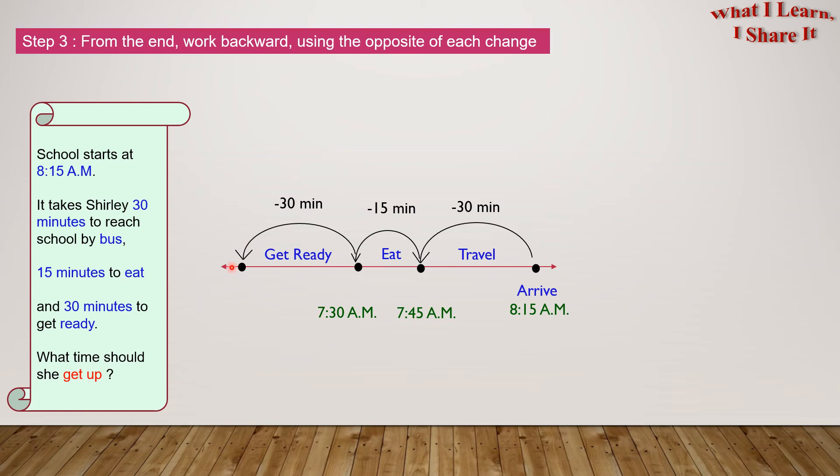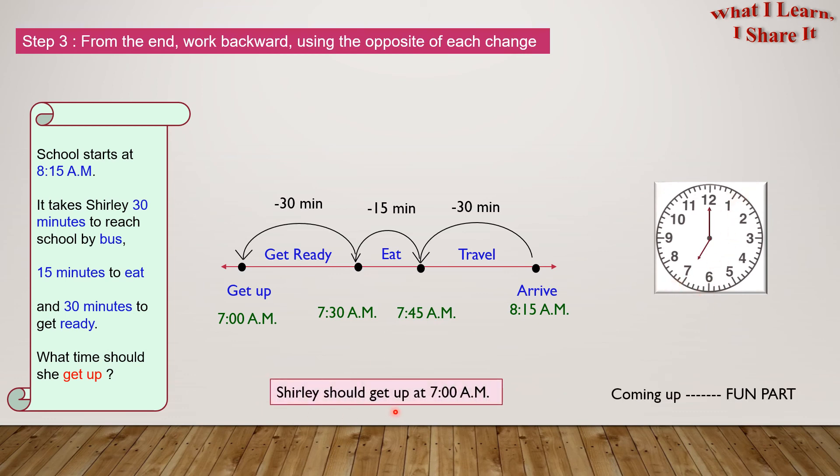And she takes 30 minutes to get ready. So 7:30, five minutes earlier would be 7:25, ten minutes earlier would be 7:20, 15 minutes earlier would be 7:15, 20 minutes earlier would be 7:10, 25 minutes earlier would be 7:05, 30 minutes earlier would be 7 o'clock. So she gets up at 7 o'clock AM. Here is 7 o'clock. Shirley should get up at 7 AM.